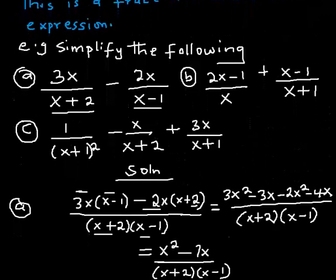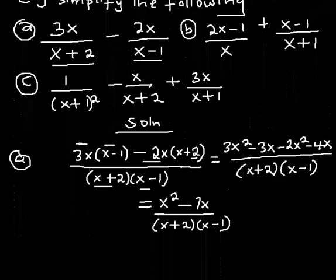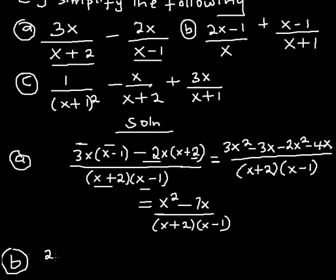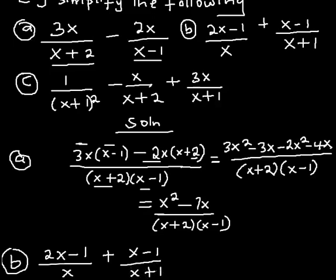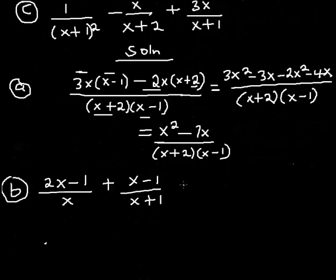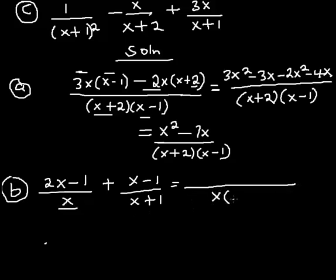Now let's look at part (b) of the question. I have (2x − 1) divided by x, plus (x − 1) divided by (x + 1). The LCM of the denominators is the product of x and (x + 1), so LCM = x(x + 1).